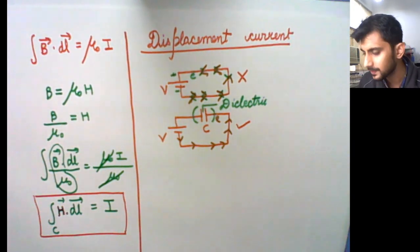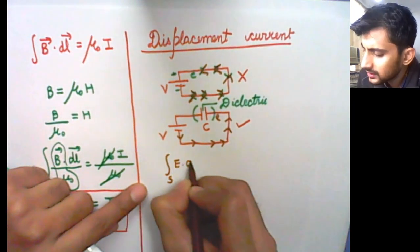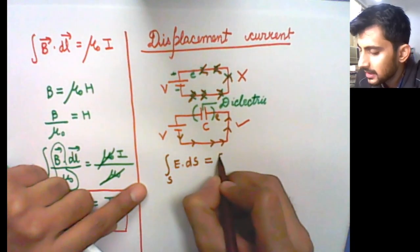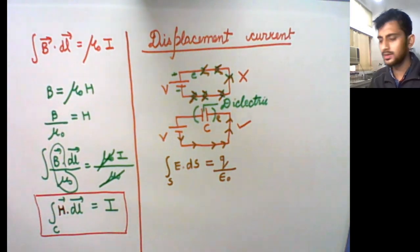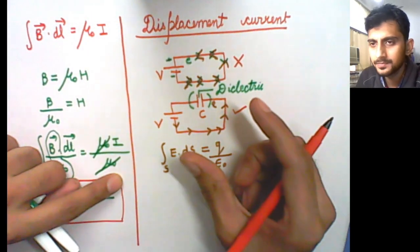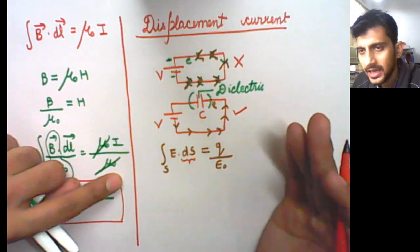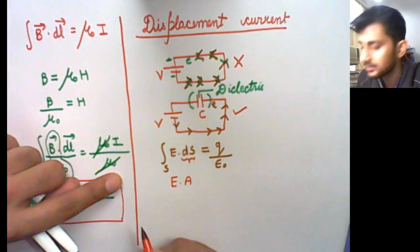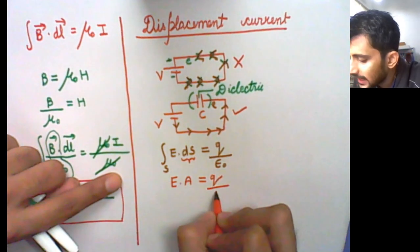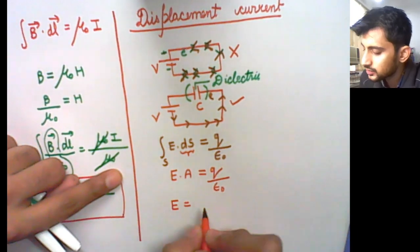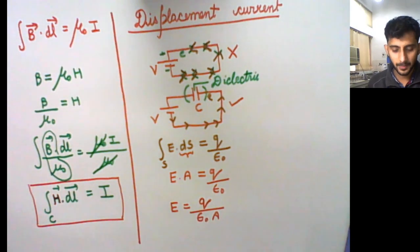From Gauss's law, the surface integral of E·ds equals q divided by epsilon. For a parallel plate capacitor with plate area A, since E is constant we get E·A equals q divided by epsilon-naught, so E equals q divided by (epsilon-naught times A), where A is the area of one plate of the parallel plate capacitor.